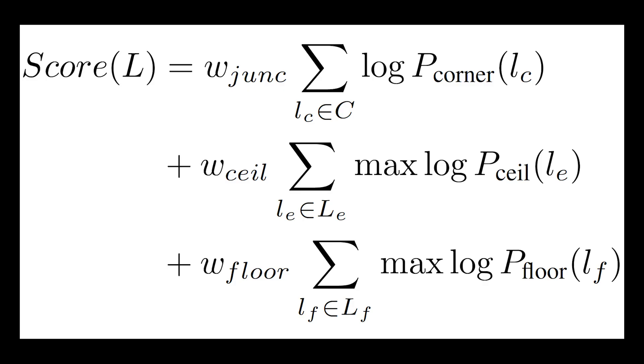This brings us to the last module, the Manhattan Layout Optimizer. It samples candidate layouts by changing one of the predicted wall positions within plus or minus 10%. Then, it tries to optimize the following score. The capital C denotes the corner positions of the candidate layout. LE and LF are the wall ceiling boundaries and the wall floor boundaries. The capital P represents the pixel-wise probability maps, while Ws are the weights associated with each term. After running grid search, they find out that the best combinations for these Ws are 1, 0.5, and 1. This observation matches the intuition that the weight associated with the wall floor boundary should be higher, as they can help predict the occluded corners on the ground.